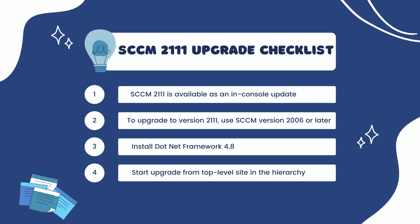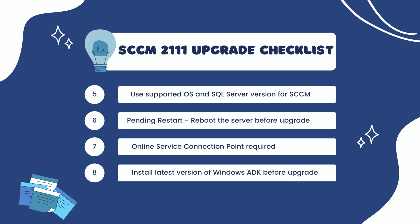Number 4, apply the version 2111 updates starting at the top-level site in the hierarchy. First, perform the CAS upgrade, then you can begin the upgrade of each child site. Complete the upgrade of each child site before you begin to upgrade to the next site. Number 5, ensure that you are running a supported operating system version and supported SQL Server version. Number 6, if you are running SACM 2002 or an older version, refer to my blog post on SACM in-place upgrade paths.